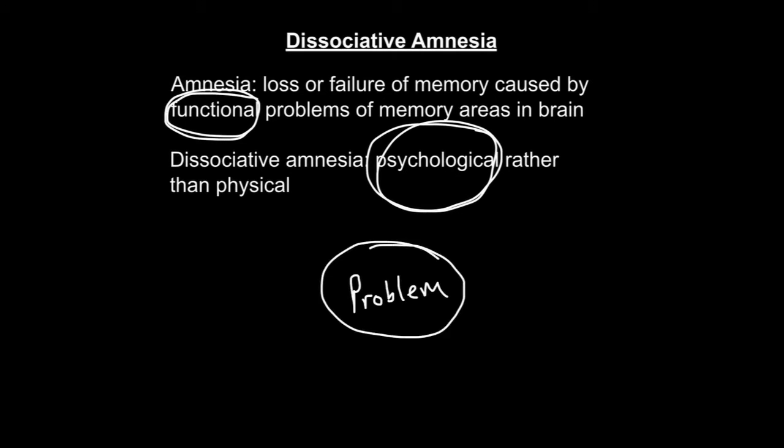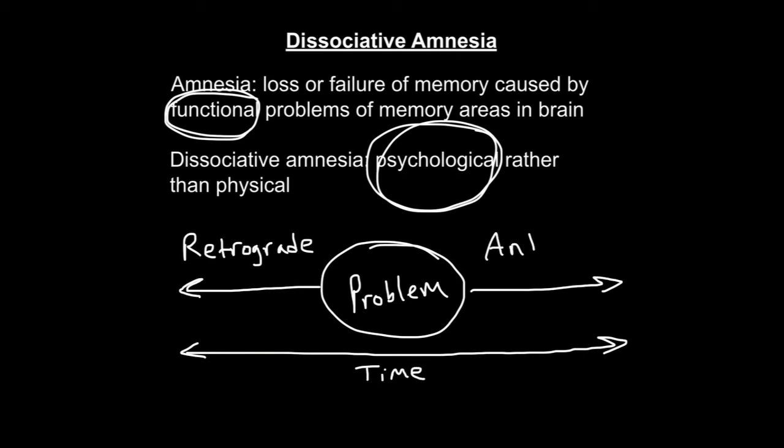There are two main categories of amnesia. In retrograde amnesia there's a loss of memory for events that occurred prior to the onset of the problem. In anterograde amnesia there's loss of memory for events that occurred after the onset of the problem.